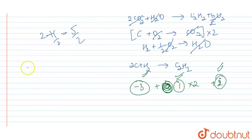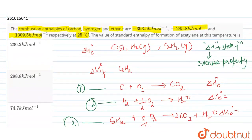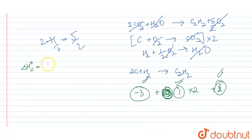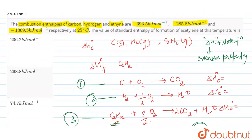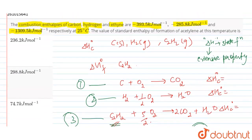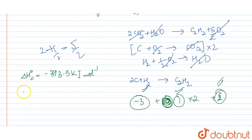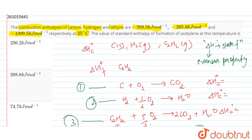Now the ΔH°c values. For equation 1, carbon was -393.5 kJ/mol. Equation 2 is -285.8 kJ/mol. Equation 3 is -1309.5 kJ/mol.